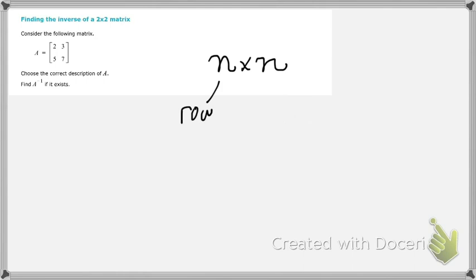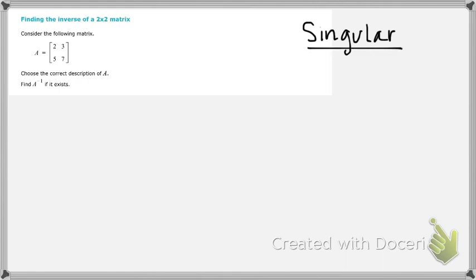One last thing to consider about inverses is that not every matrix has an inverse, and when a matrix does not have an inverse, we say that it is a singular matrix, and we'll say more about that later on and address this issue of a singular matrix.